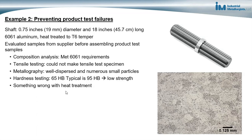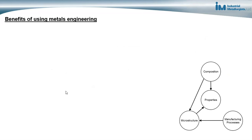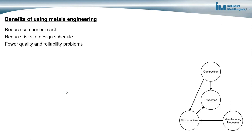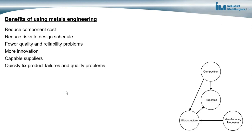There are a lot of benefits of using metals engineering. First is reducing component cost through design for reliability and selecting less expensive materials. It reduces risks to design schedule by ensuring materials have good reliability and meet requirements, so products pass tests the first time. There will be fewer quality and reliability problems. There's also more innovation as we engineer materials rather than only engineering the mechanical form of components, and we can identify capable suppliers and quickly fix product failures and quality problems.